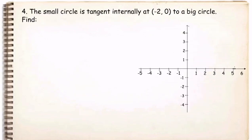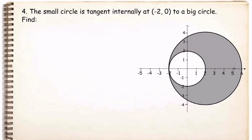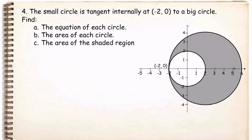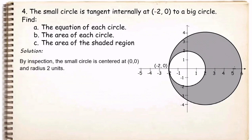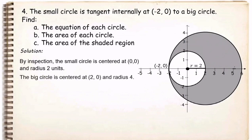For number 4, the small circle is tangent internally at (−2, 0) to a big circle. Find: letter A, the equation of each circle; letter B, the area of each circle; letter C, the area of the shaded region. By inspection, the small circle is centered at the origin with radius 2 units, while the big circle is centered at (2, 0) with radius 4.